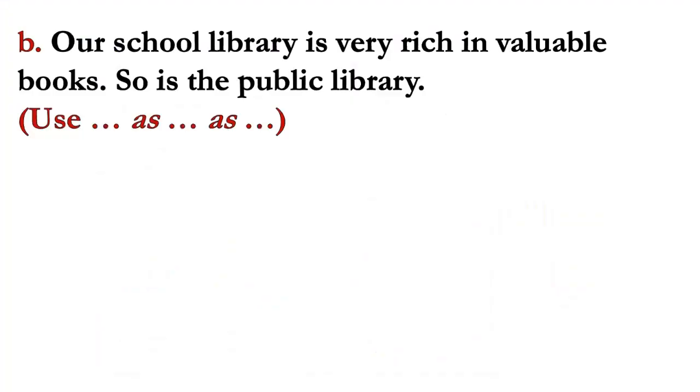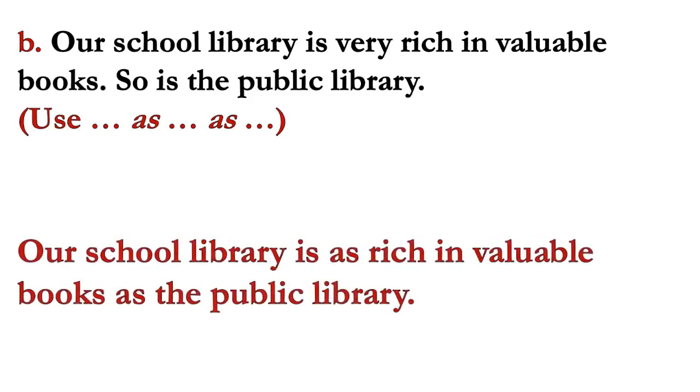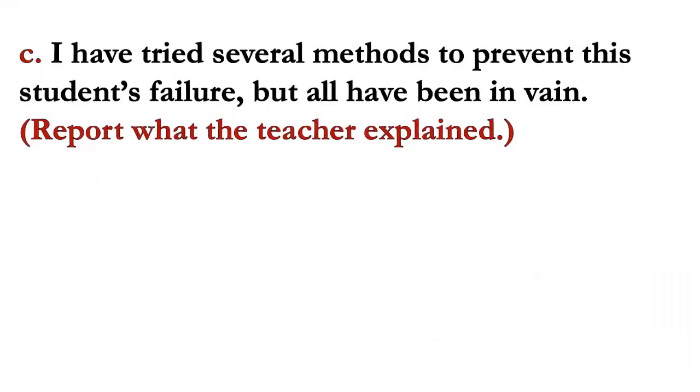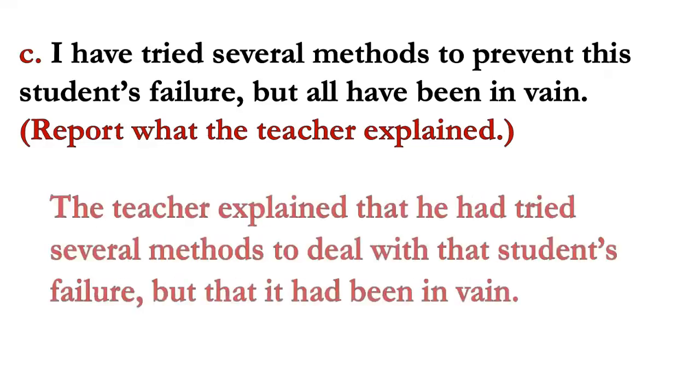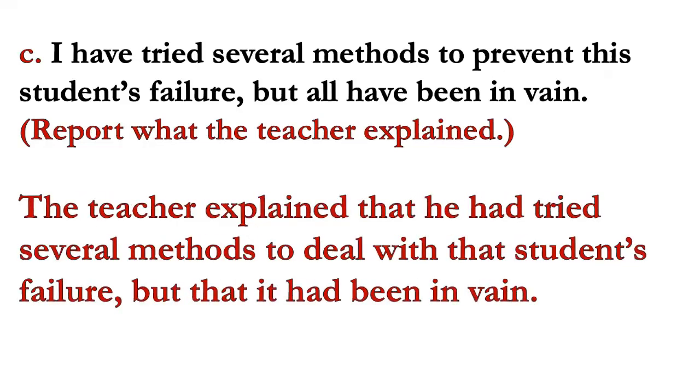In sentence B, you are going to use as. The answer would be: Our school library is as rich in valuable books as the public library. In sentence C, you are going to report what the teacher explained. The answer would be: The teacher explained that he had tried several methods to deal with that student's failure, but that it had been in vain.